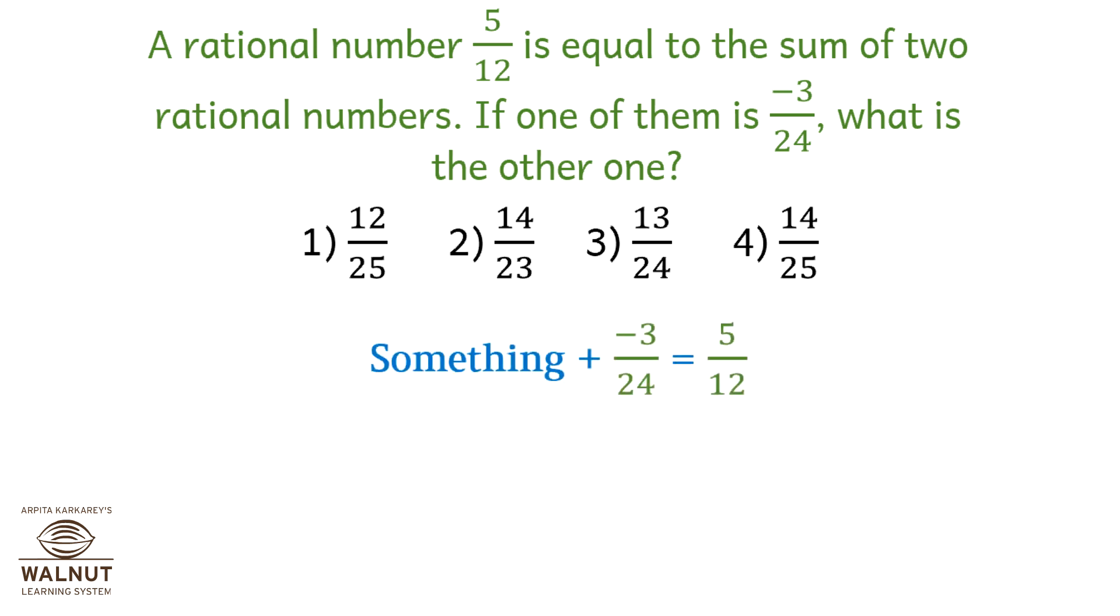Something plus minus 3 upon 24 is 5 upon 12. So something is equal to 5 upon 12 minus 3 upon 24, which is equal to 10 upon 24 minus 3 upon 24, which is equal to 10 plus 3 upon 24, which is 13 upon 24, which is option 3.